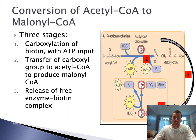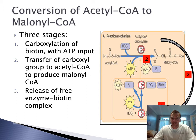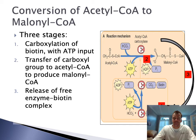This enzyme reaction occurs in three stages. First, you get carboxylation of biotin with ATP input. Second, you get transfer of the carboxyl group to acetyl-CoA to produce malonyl-CoA — so you go from acetyl-CoA to malonyl-CoA using this carboxyl group. Then ultimately you get release of the free enzyme-biotin complex to repeat the process. The point is you're going from acetyl-CoA to malonyl-CoA, but it's really a three-stage reaction.